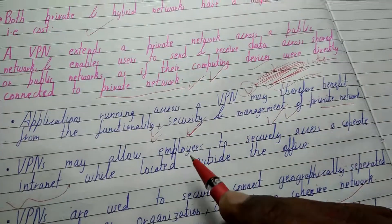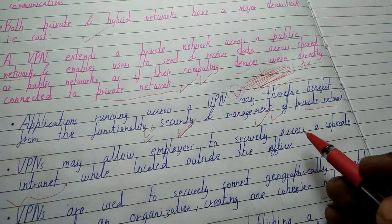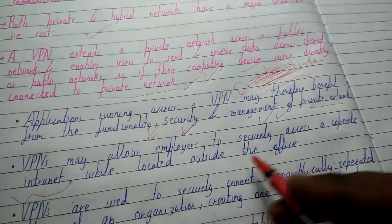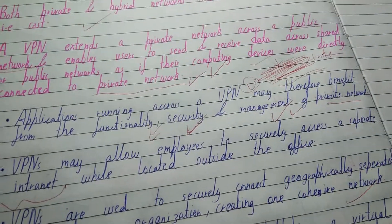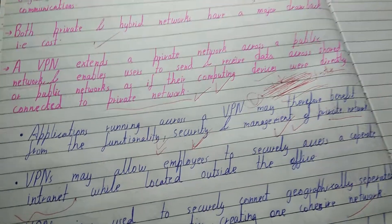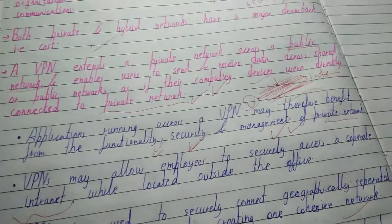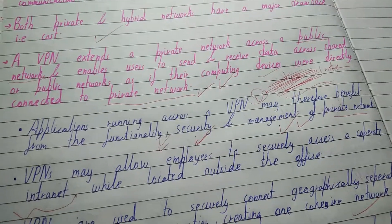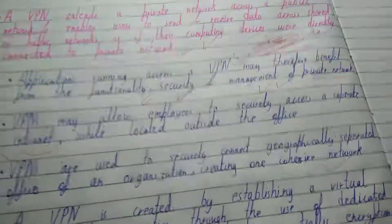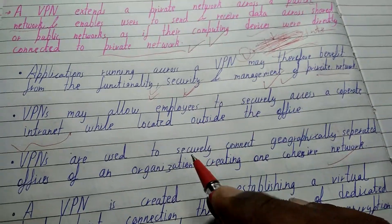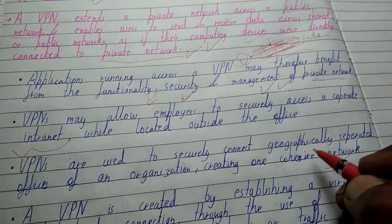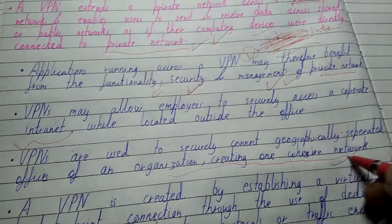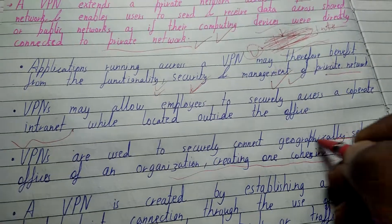VPN may allow employees to securely access a corporate intranet while located outside of the office, so employees outside the office can access the corporate intranet as needed. VPNs are also used to securely connect geographically separated offices of an organization, creating one cohesive network. This is one big advantage that promotes VPN use in large organizations.